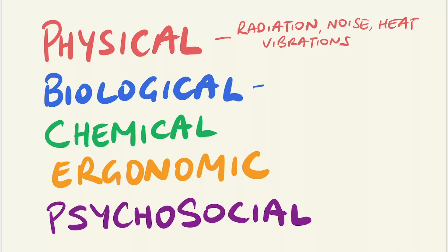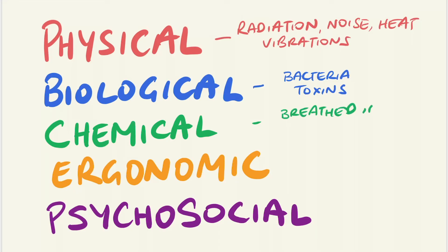Biological hazards are defined as organic substances that can pose a threat to the health of humans and other living organisms. This could range from bacteria to biological toxins. Chemical hazards relate to the harmful effects to health as a result of exposure to chemical substances. This could be breathed in, consumed orally, or come into contact with skin.